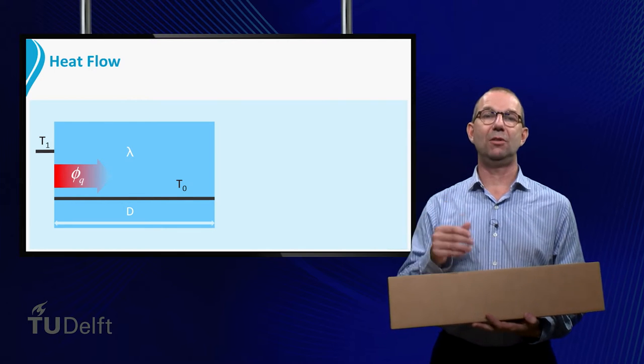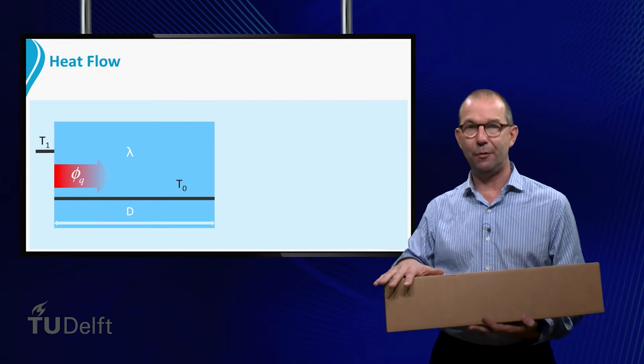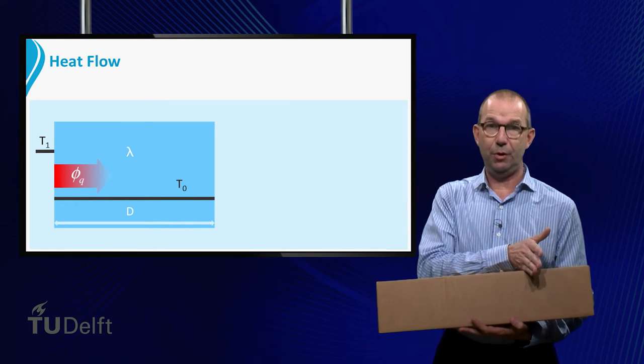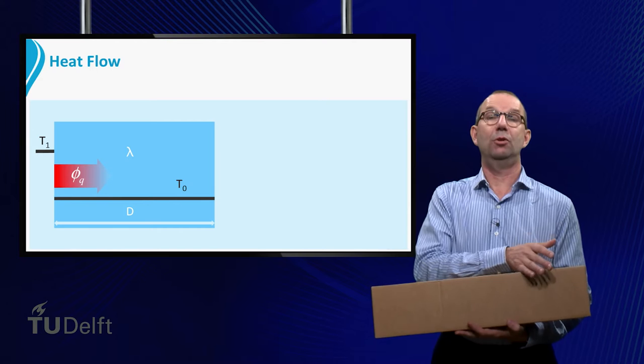Thus, we may expect that the temperature close to the left boundary is higher than T0, while the rest of the plate hasn't changed its temperature at all.